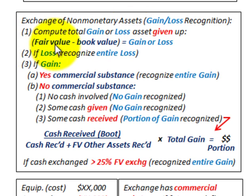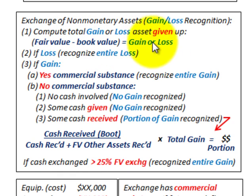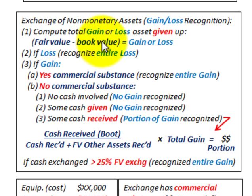You would take the fair value of the asset, less its book value — subtract the book value from the fair value — and that would determine any gain or loss on this exchange. The book value is the equipment cost sitting in the books, what you paid for the equipment, less any accumulated depreciation.